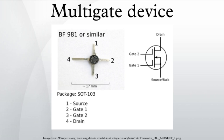Gate all-around FETs are similar in concept to FinFETs, except that the gate material surrounds the channel region on all sides. Depending on design, gate all-around FETs can have two or four effective gates. They have been successfully characterized both theoretically and experimentally, and have also been successfully etched onto InGaAs nanowires, which have a higher electron mobility than silicon.